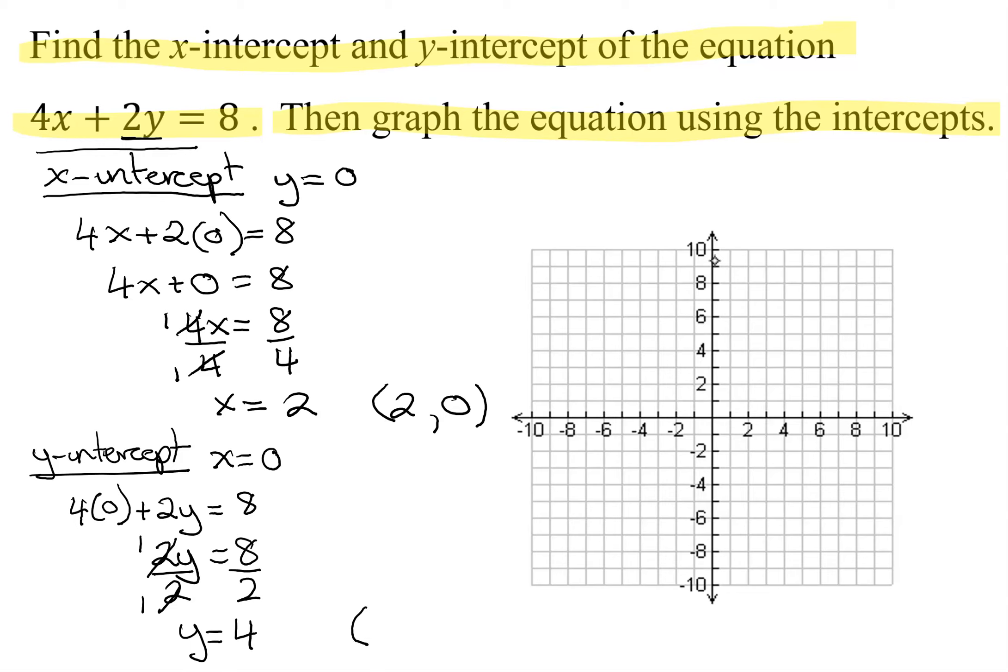Again, the intercept needs to be written as an ordered pair. The x-coordinate is 0, the y-coordinate is 4. So now I'm ready to graph my line.